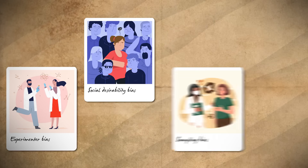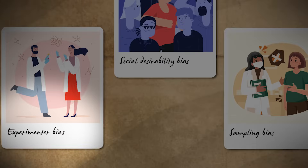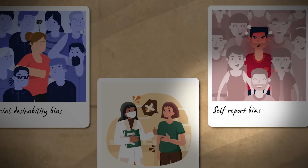Now, there are other biases that we need to be aware of, such as experimenter bias, social desirability bias, sampling bias, and self-report bias. But we'll talk about more of those in the next video when we look at research methods and design.